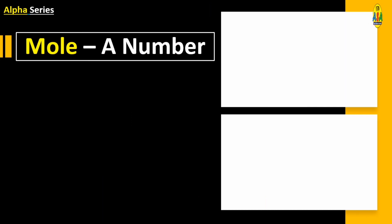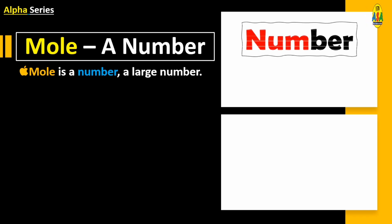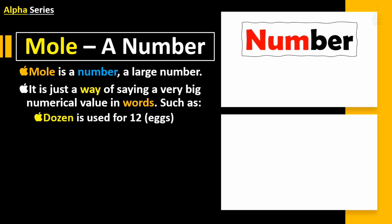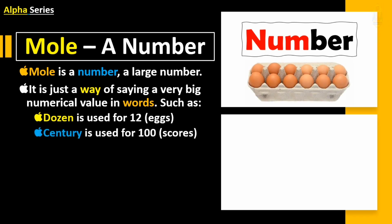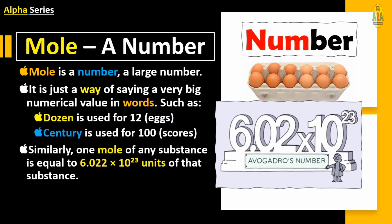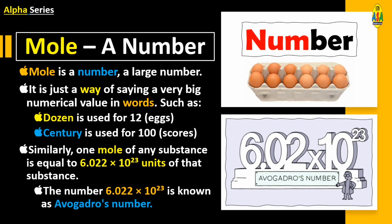How large is exactly one mole? Mole is a number — a large number. It is just a way of saying a very big numerical value in words. Just as a dozen is used for 12 eggs and a century is used for 100 scores, one mole of any substance is equal to 6.022 × 10²³ units of that substance. The number 6.022 × 10²³ is known as Avogadro's number.